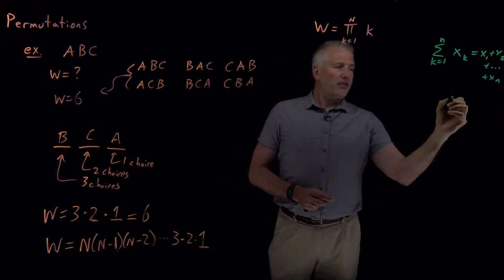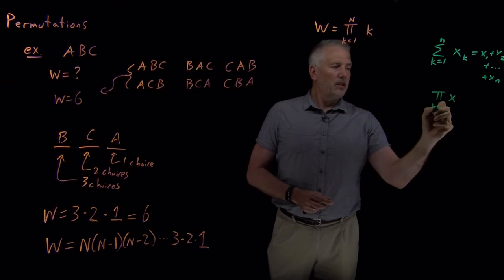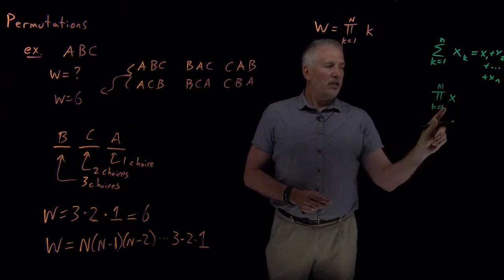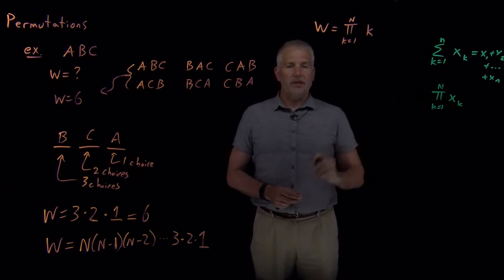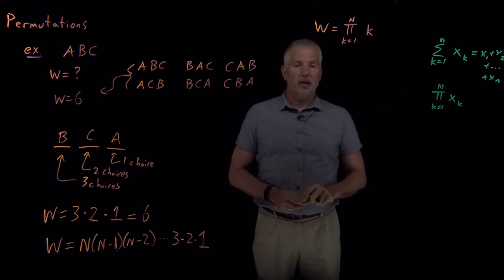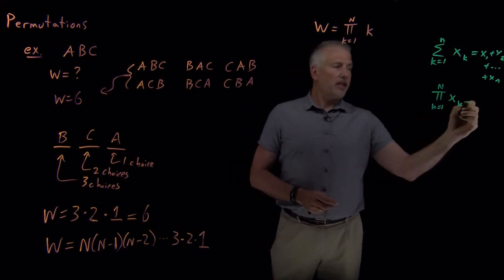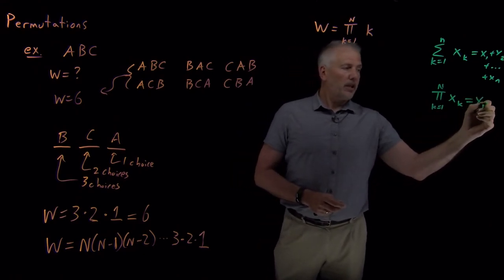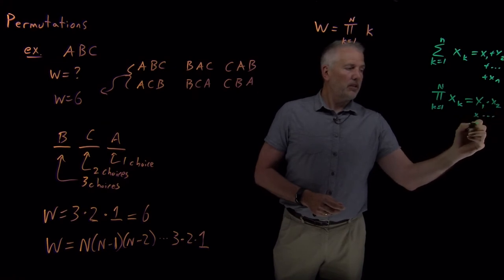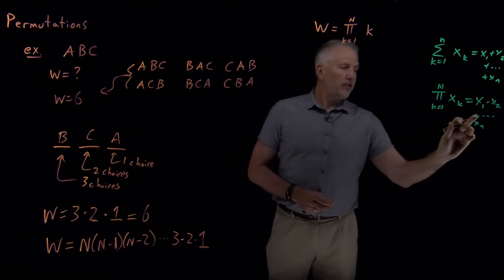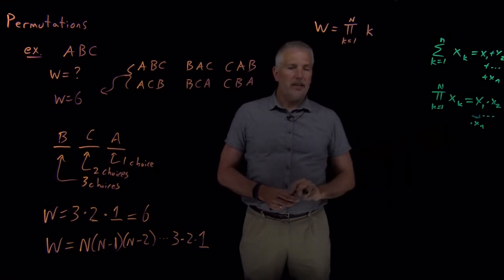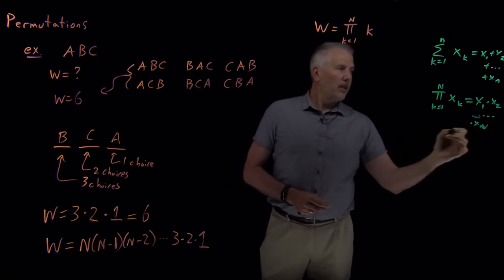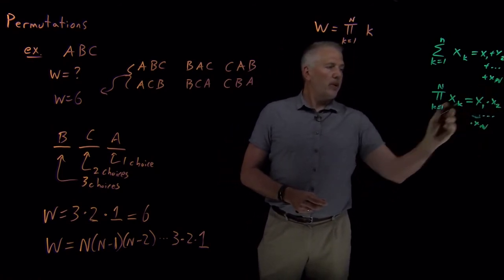Product notation is the same idea, except if I put the sign out front as a capital Pi, standing for product notation, then what that means is I take the product of X1 times X2 times, et cetera, all the way up to times XN. So multiply X1, X2, X3, all the way up to XN.